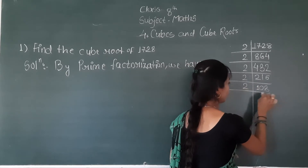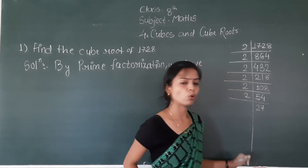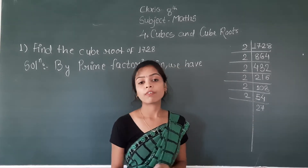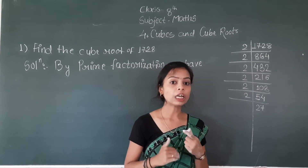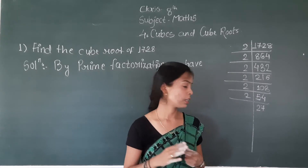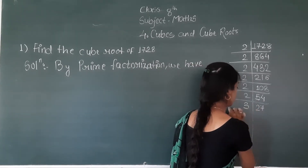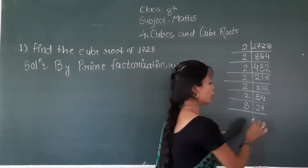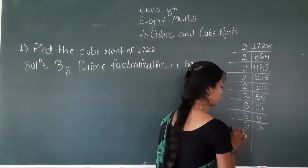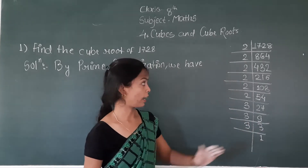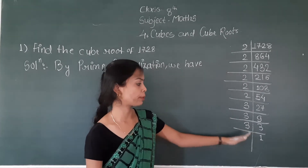Now again divide this 108 by 2, the answer will be 54. Again divide this 54 by 2, the answer will be 27. Now this 27 is not divisible by 2. That means you have to switch to the next prime number. Our next prime number after 2 is 3. Now divide this 27 by 3 — the answer will be 9. Again divide this 9 by 3 — the answer will be 3. Again divide this 3 by 3 — the answer is 1. You have to divide the given number until your last answer is 1.